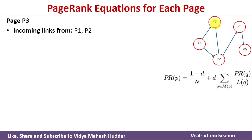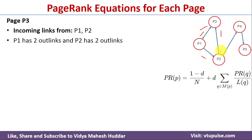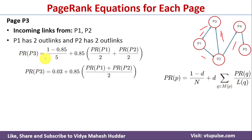Now we find the page rank equation for P3. P3 has two incoming links — from P1 and P2. P1 has two outbound links, and P2 also has two outbound links (to P4 and P3). Substituting into the formula: PageRank(P3) = 0.03 + 0.85 × [PageRank(P1)/2 + PageRank(P2)/2], which simplifies to: PageRank(P3) = 0.03 + 0.85 × (PageRank(P1) + PageRank(P2)) / 2.